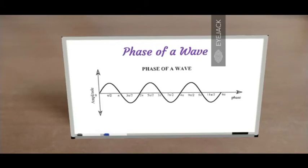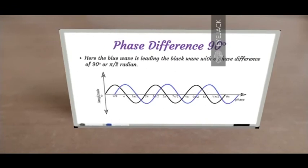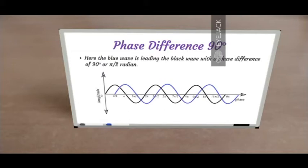Now let's look at different cases of phase difference. Here's an example of a phase difference of 90 degrees or pi by 2 radians. There is a black wave starting at zero, and a blue wave which starts at pi by 2 radians. As it moves forward, we see that the phase difference is constant at pi by 2 radians. We can say that the blue wave is leading the black wave with a phase difference of pi by 2 radians or 90 degrees. Conversely, the black wave is lagging behind the blue wave. If you change the reference point, you can also conclude that the black wave is leading the blue wave — but the magnitude remains the same, which is pi by 2 radians or 90 degrees.